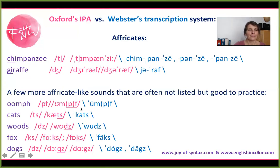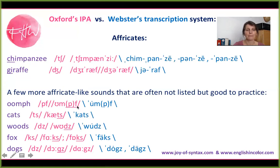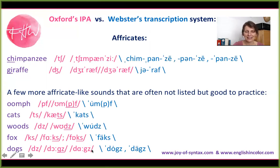The following sounds are not considered phonemes by linguists because they say those are simply combinations of phonemes and we don't need to list them separately. I listed them here because they are challenging sounds for Germans — the difference between 'cats' and 'woods' and 'fox' and 'dogs.' So I think it's good to practice those: cats, woods, fox, dogs.